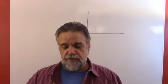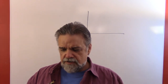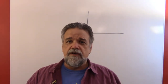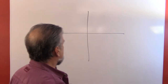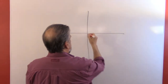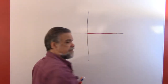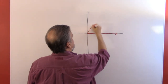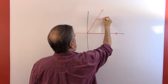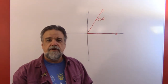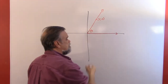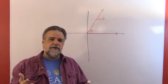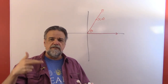Hey math students, time to talk some more about trigonometry. Today I want to look at trigonometry on a grid. Let's say we have an angle where one side goes out along the x-axis, and the other side goes up through the point (5, 12). I want to find the sine of theta, the cosine of theta, the tangent of theta, the cosecant, the secant, and the cotangent of theta.